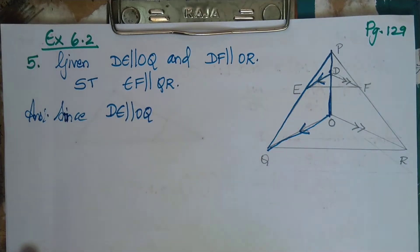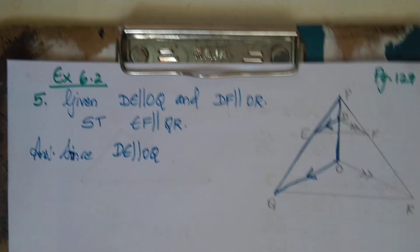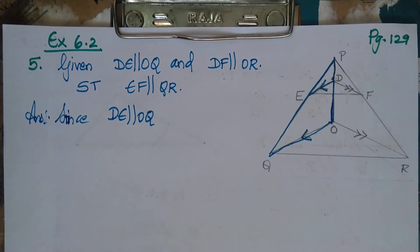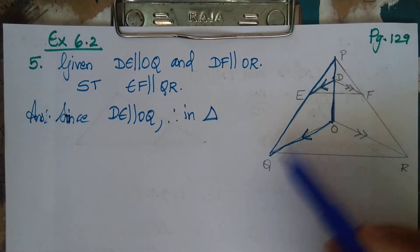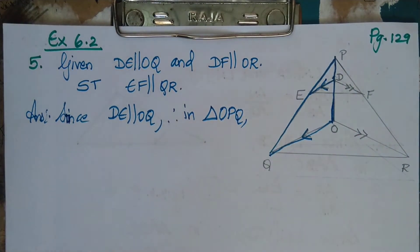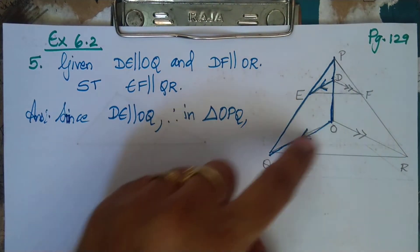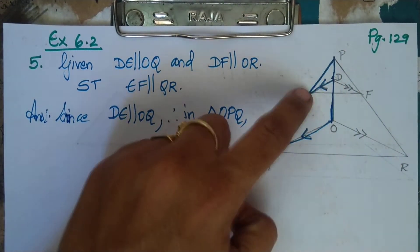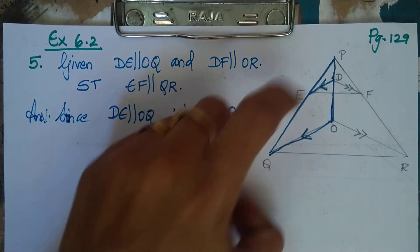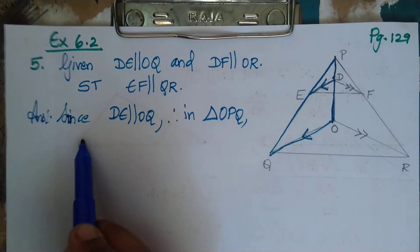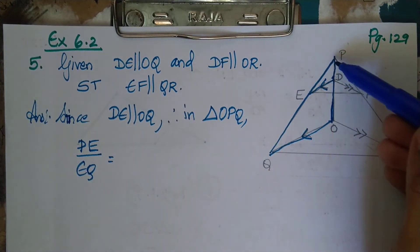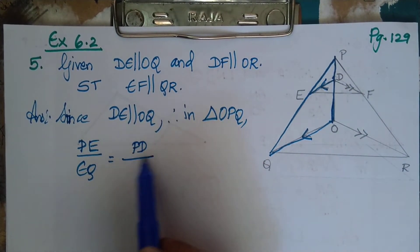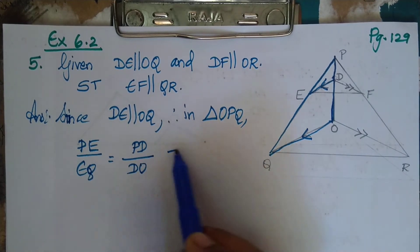DE is parallel to OQ. Therefore, in triangle OPQ, by BPT, the line DE divides the two sides in the same ratio. The opposite vertex is P. So we can write: PE by EQ is equal to PD by DO. This is equation number one.